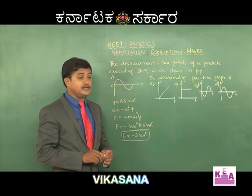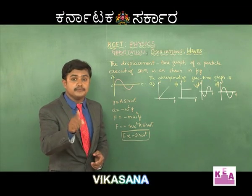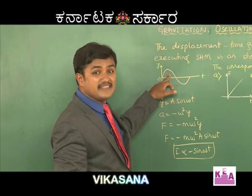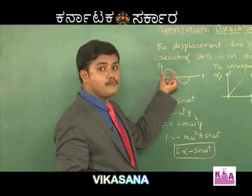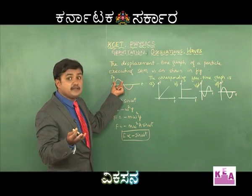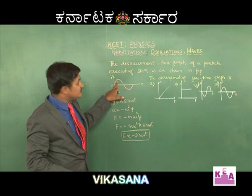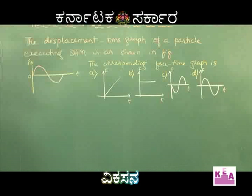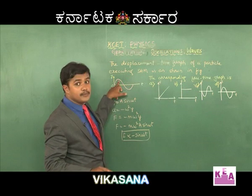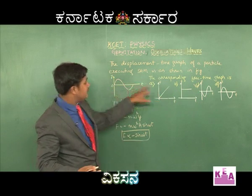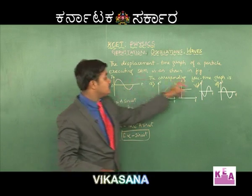There is also a shortcut: the acceleration of a body executing SHM is always opposite to displacement. During the first half of the period, displacement is positive, so force should be negative. There is only one graph that shows negative force when displacement is positive — that is option C, the minus sine graph. When displacement is positive, force is negative, and when displacement is negative, force is positive. So knowing the relation between acceleration and displacement, you can directly conclude that C is correct.